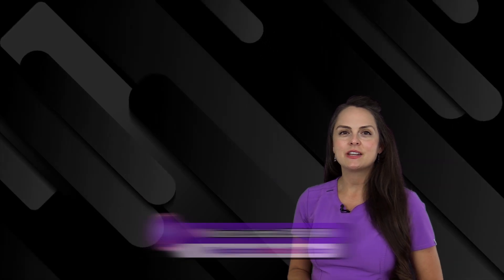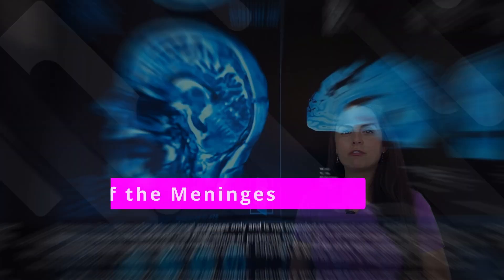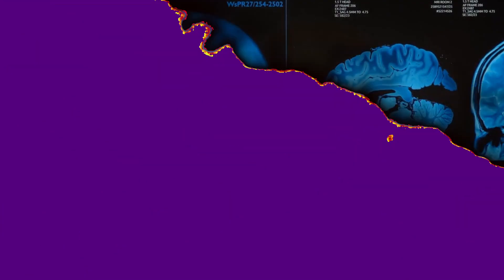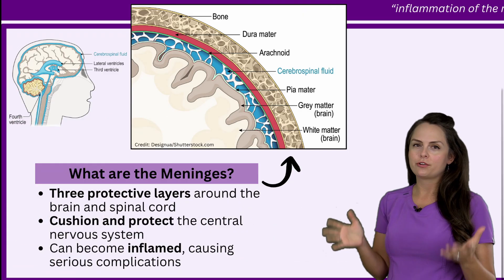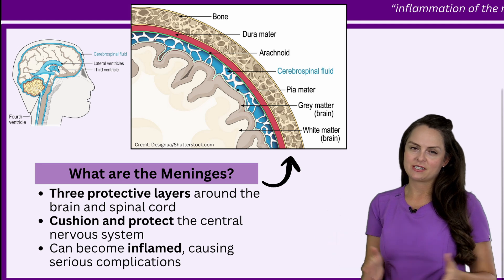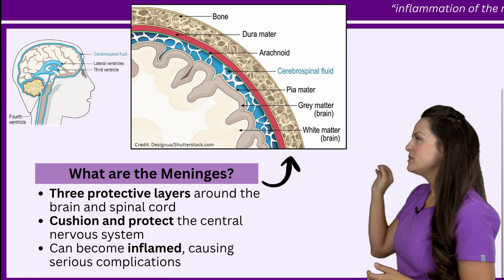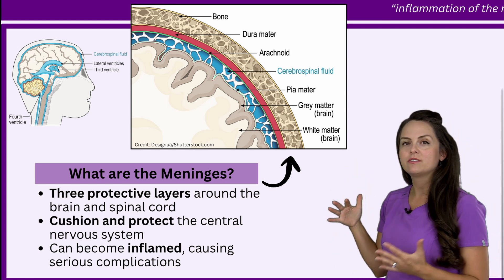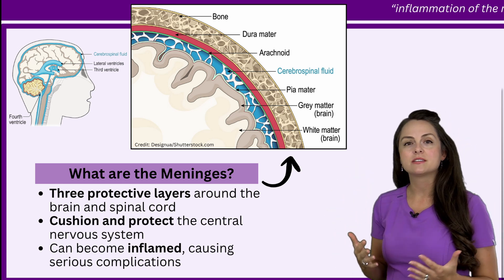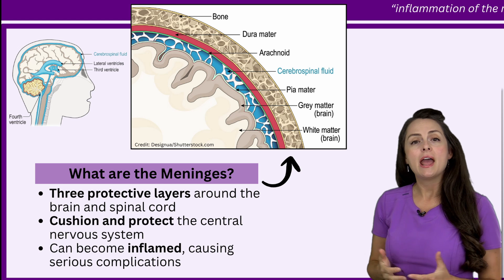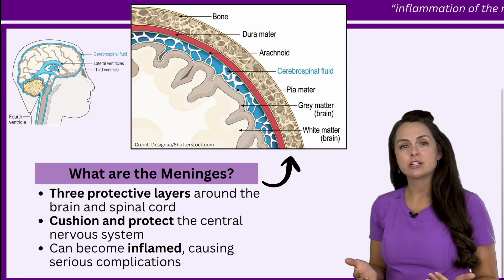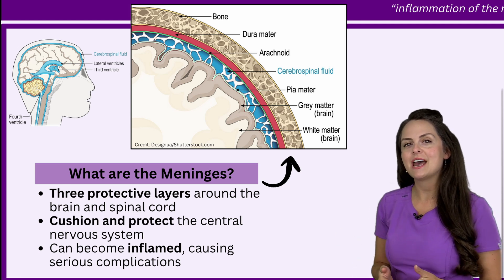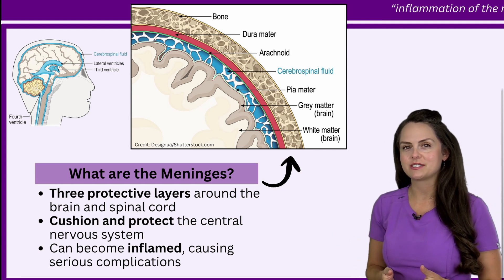Hey everyone, it's Nurse Sarah, and in this video I'm going to go over the layers of the meninges. The meninges are a three-layer protective structure that surrounds the brain and the spinal cord. What they do is work to cushion and protect our central nervous system.